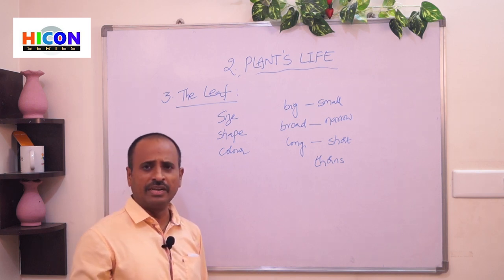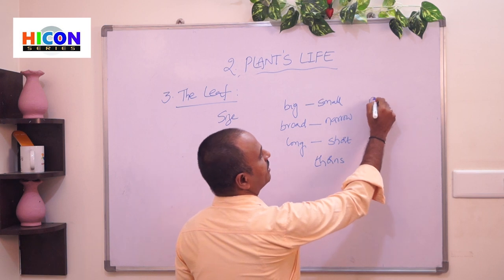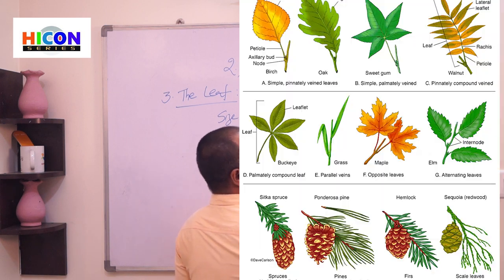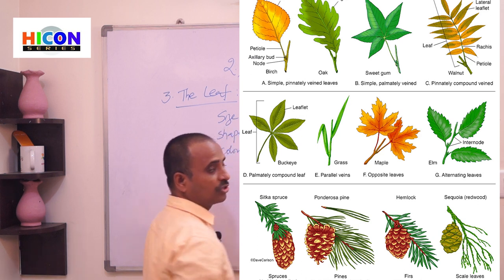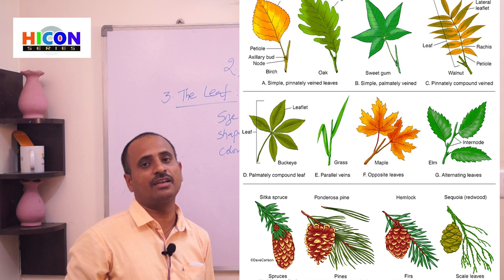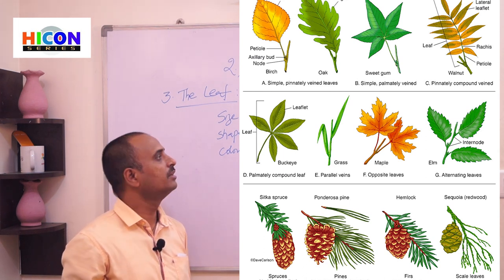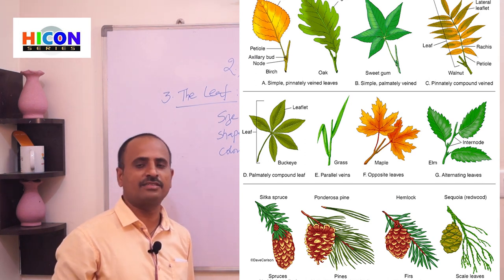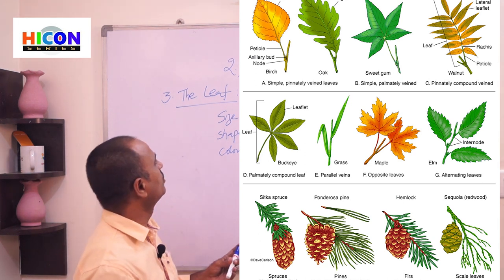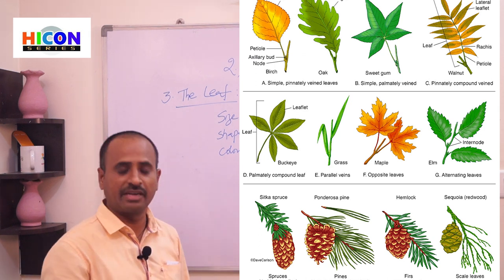Some leaves are in red color, some in yellow color, and some in white color. Most leaves are green, but some plants like crotons have leaves in red, yellow, and white colors. This is about the different shapes, sizes, and colors of plant leaves.